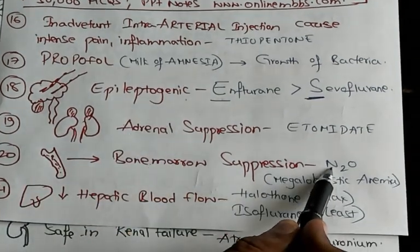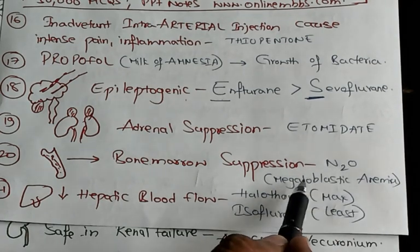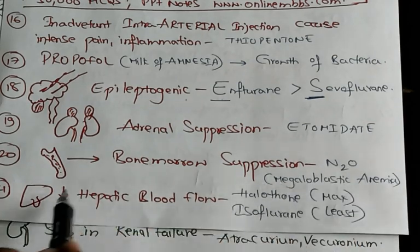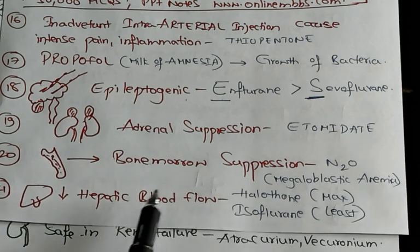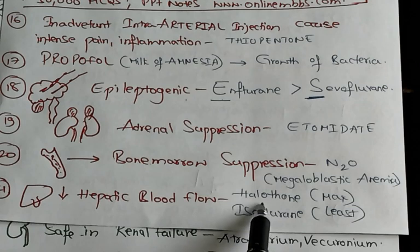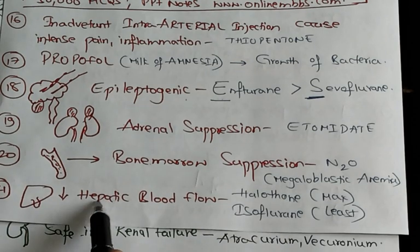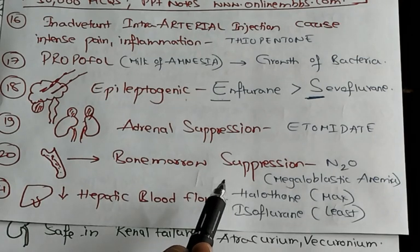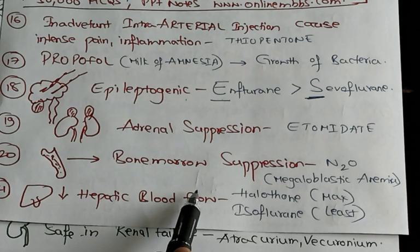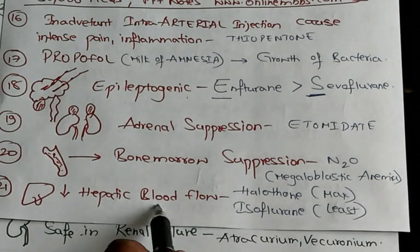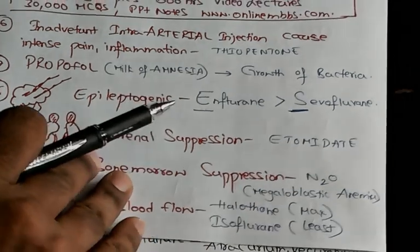Bone marrow suppression is typically caused by nitrous oxide, which also leads to megaloblastic anemia. Regarding decreased hepatic blood flow: halothane has the maximum effect of decreasing hepatic blood flow — halothane hepatitis occurs; first exposure has little effect but second exposure causes severe hepatic damage. Whereas isoflurane has the least effect on decreasing hepatic blood flow.